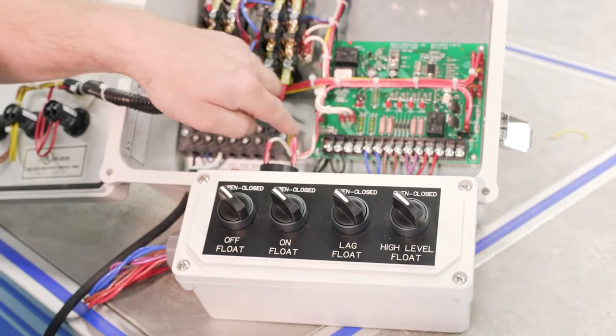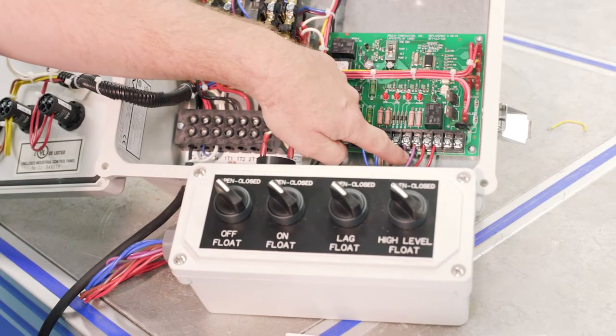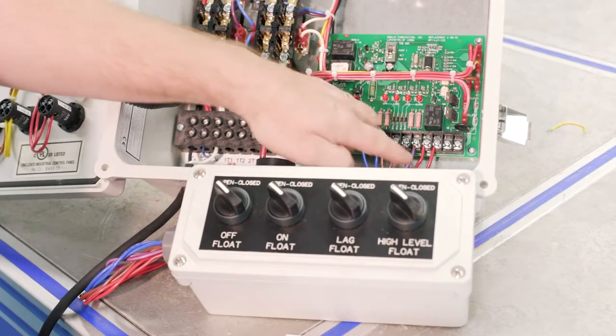So this is the off float, that's the lowest float, the on is the brown, the lag is the purple, and then the high level float, which is the highest float, is the red.